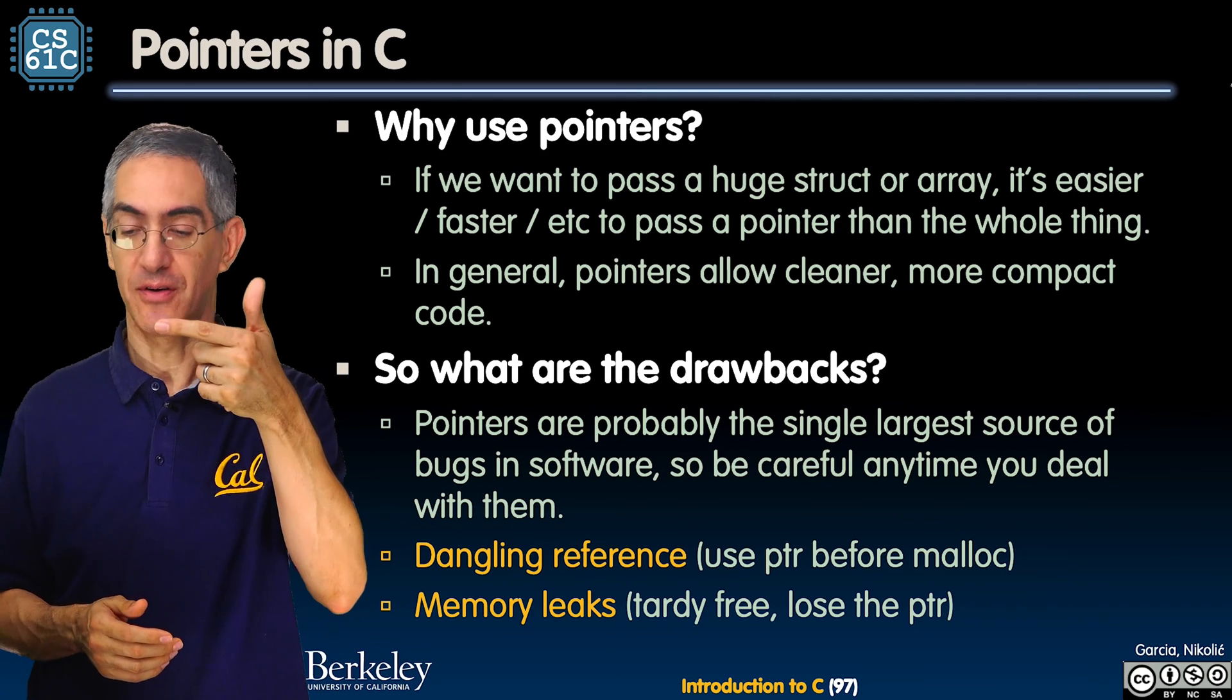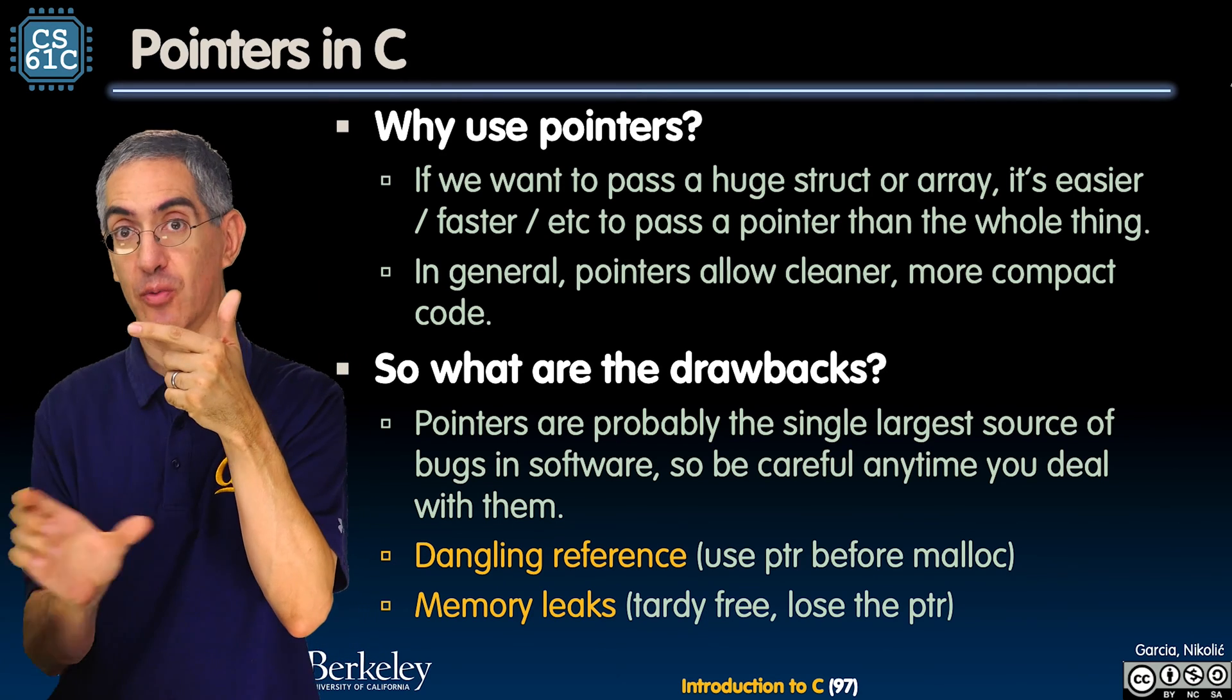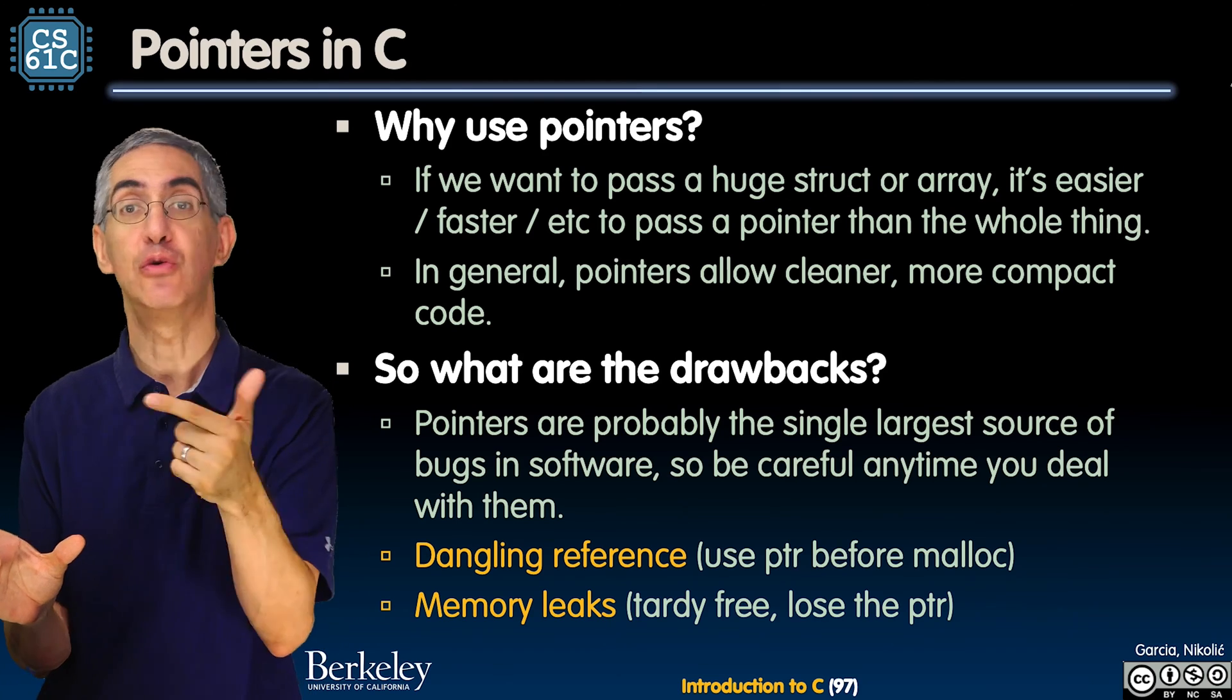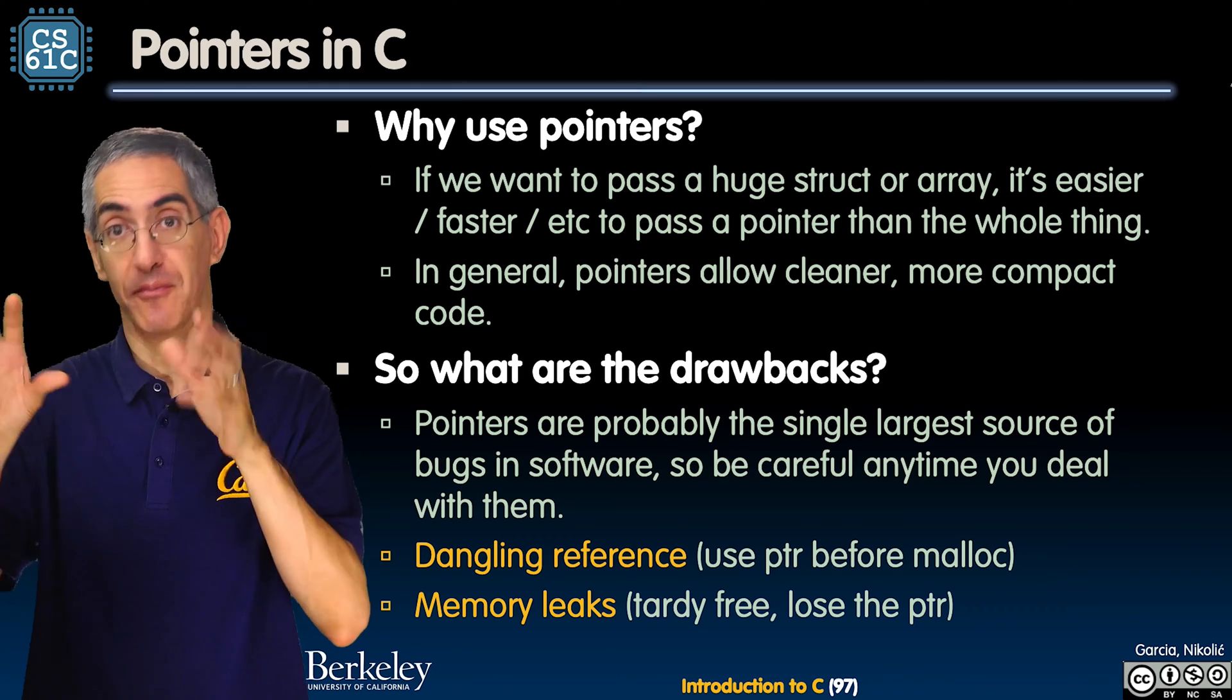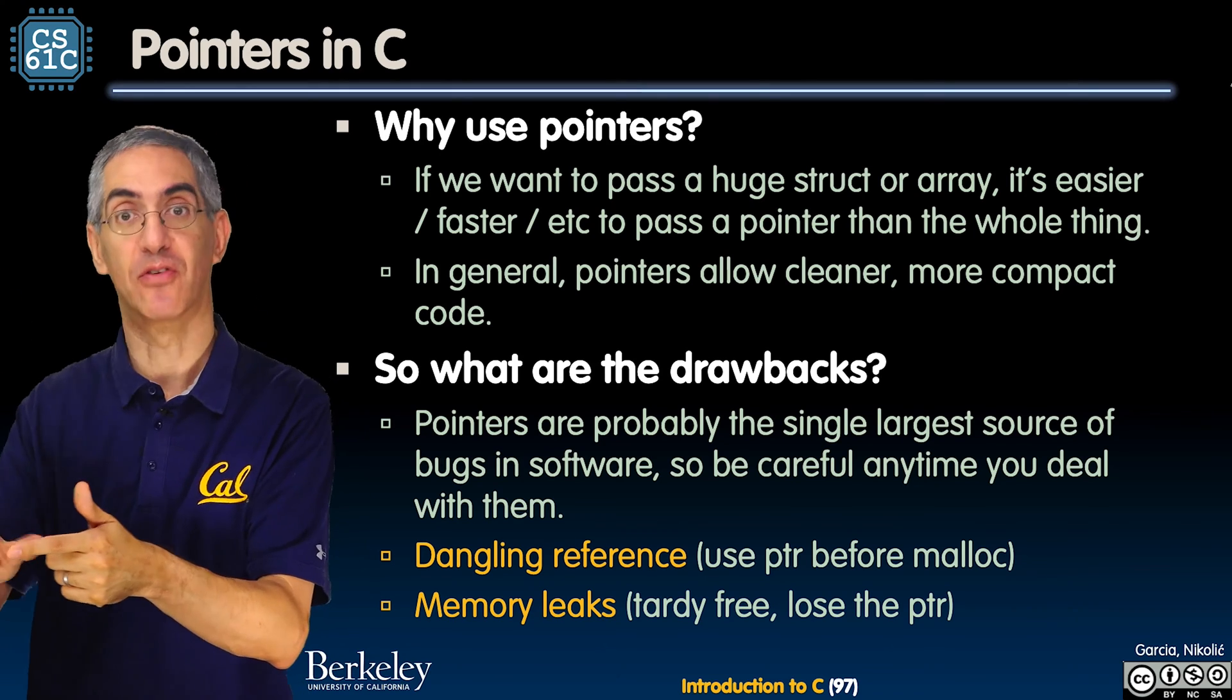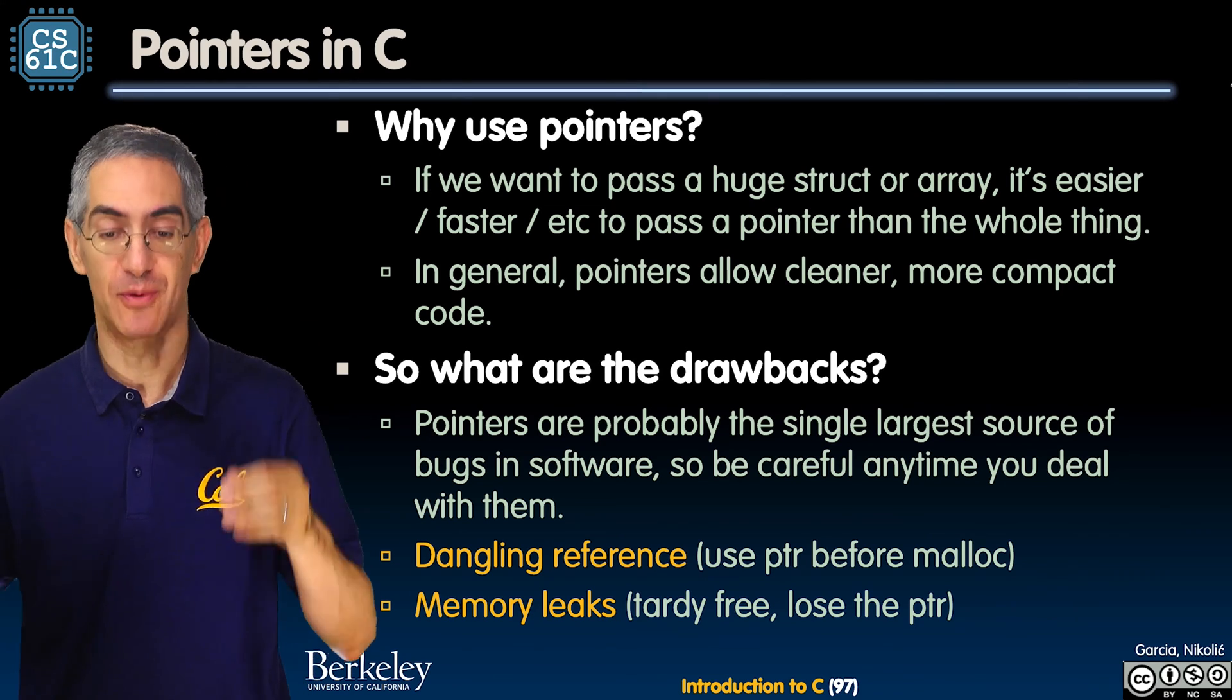So dangling reference says I make a pointer, I initialize a pointer, then here is when I'm going to malloc and set it to it, but I start using it before I actually have set it to the right malloc value. There's another minor error of reading from this uninitialized array before you even write to it.